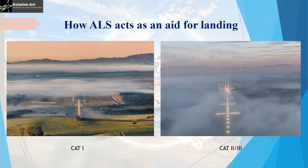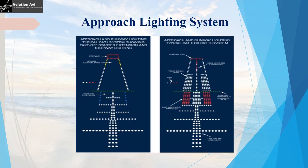If visibility reduces further, the CAT-1 approach lighting system will not be clearly visible. In that case we have the CAT-2 or CAT-3 approach lighting system, which is more conspicuous compared to CAT-1. The density of lights and number of crossbars increases, and red side-row barrettes are installed to make the runway more conspicuous. Touchdown lights are also installed to improve conspicuity. Together they provide greater visual aid than the CAT-1 system. The arrangement for CAT-2 and CAT-3 approach lighting is the same — it is only the rating of the ILS that provides better guidance for CAT-3 approaches.